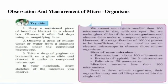Observation and Measurement of Microorganism: Keep a moist piece of bread or bakery item in a closed box and observe it after 3-4 days using a magnifying lens. Observe a drop of muddy water or water from a stagnant puddle under a compound microscope. Take a drop of yogurt or buttermilk on a glass slide and observe it under a compound microscope. We cannot see objects smaller than 100 micrometers with our eyes, so we make glass slides of microorganisms and observe them under a compound microscope. If a magnification of 1000x proves insufficient, we need an electron microscope. Size reference: Paramecium is about 100 micrometers, bacteria 1–3 micrometers, poliovirus 28 nanometers. Even in these minute organisms, all life processes are carried out within a single cell.